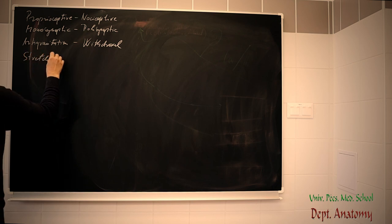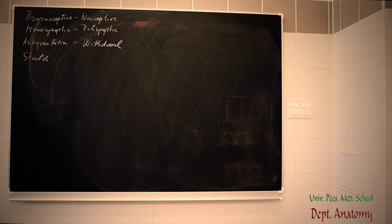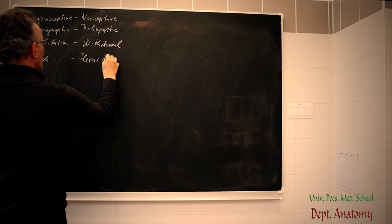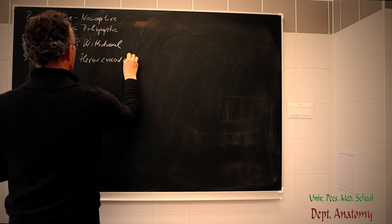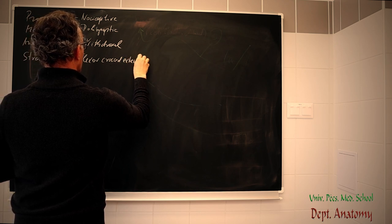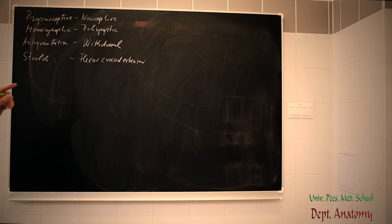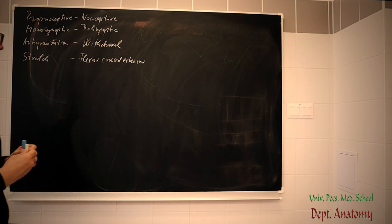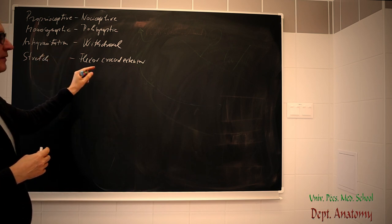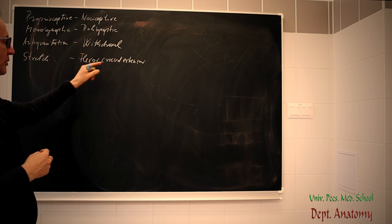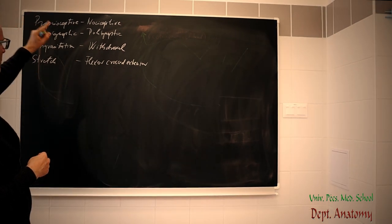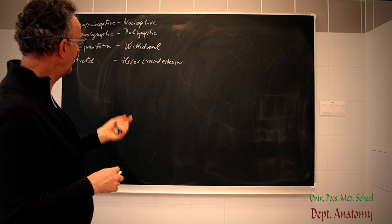This can be called also as flexor crossed extensor reflex, because the flexors are activated to remove, to shorten the given extremity. At the same time, you have to stabilize the body posture with the contralateral extensors. So, these are the synonyms for both. And now, I like to focus on the nociceptive reflex.